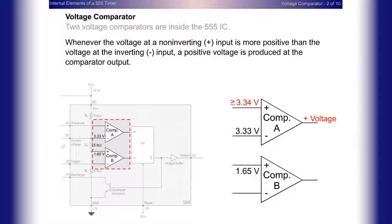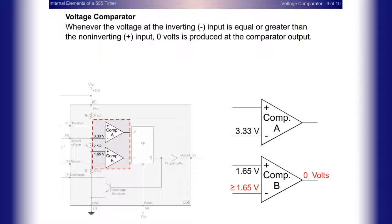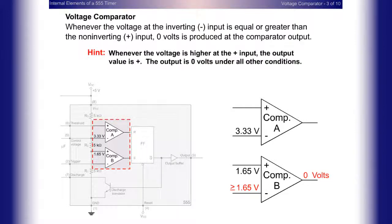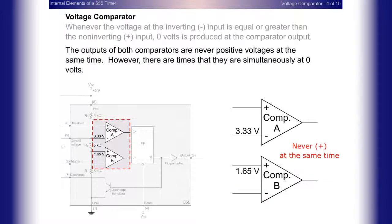Voltage comparators: Two voltage comparators are inside the 555 IC. Whenever the voltage at a non-inverting positive input is more positive than the voltage at the inverting negative input, a positive voltage is produced at the comparator output. Whenever the inverting negative input is equal to or greater than the non-inverting positive input, zero volts is produced at the output. In short, the output is positive when the voltage is higher at the positive input; otherwise it is zero volts.